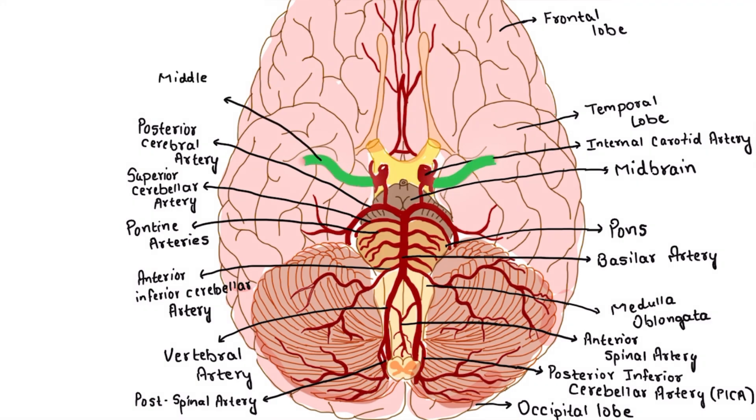The middle cerebral artery is larger than the anterior cerebral artery and is a direct continuation of the internal carotid artery. That is the reason the middle cerebral artery is most commonly affected by cerebral thrombosis. The middle cerebral artery carries 30% of carotid blood flow.